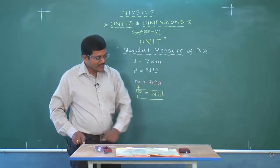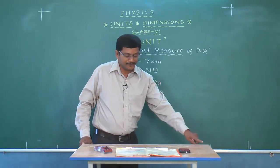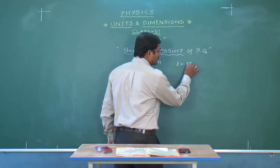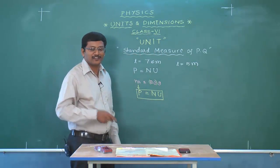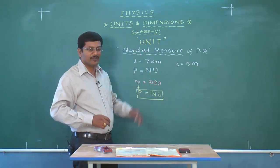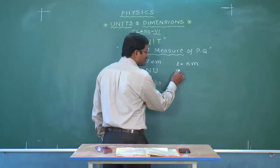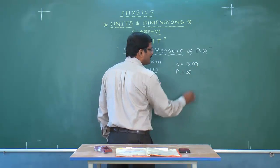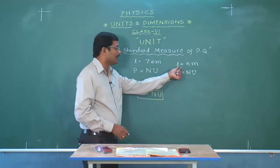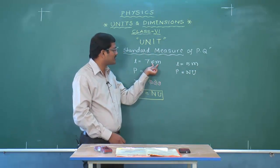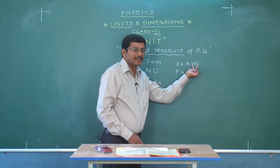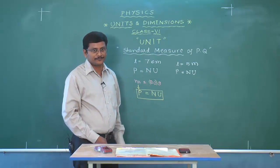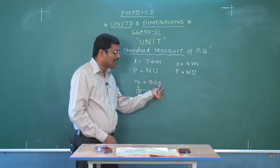Centimeter is a CGS unit and gram is also a CGS unit. If I measure the length of this room and get L = 5 meters, then 5 is the numerical value and meter is the standard measure of that length. So whether I use centimeter or meter, both are standard measures — this standard measure is called a unit.